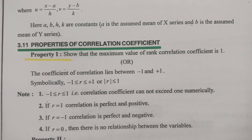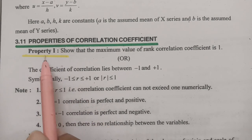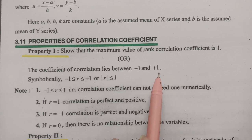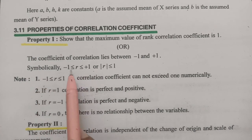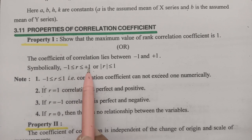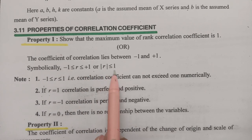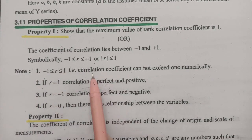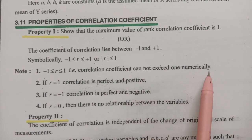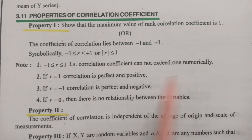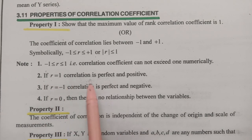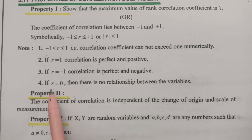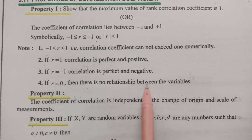The properties of correlation coefficients are as follows. Property 1: The coefficient of correlation always lies between +1 and −1. Symbolically, −1 ≤ r ≤ +1 or |gamma| ≤ 1. The correlation coefficient cannot exceed 1 numerically. If gamma = 1, the correlation is perfect and positive. If gamma = −1, the correlation is perfect and negative. If gamma = 0, there is no relationship between the variables.